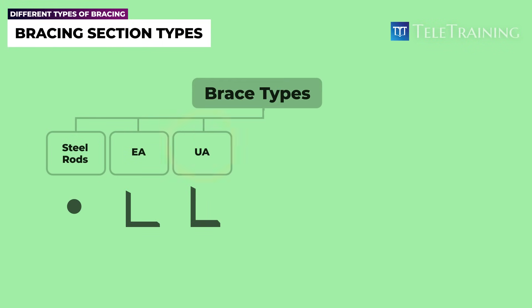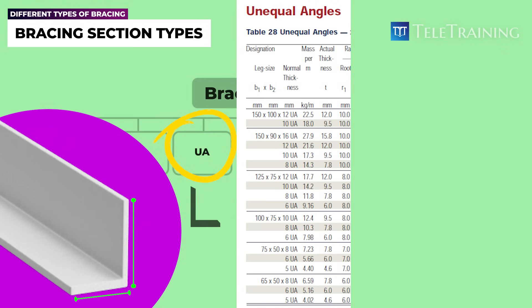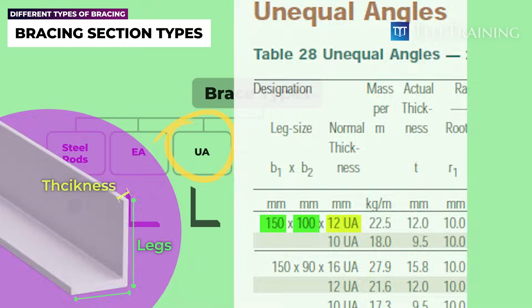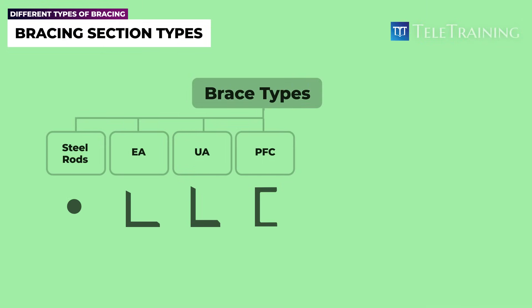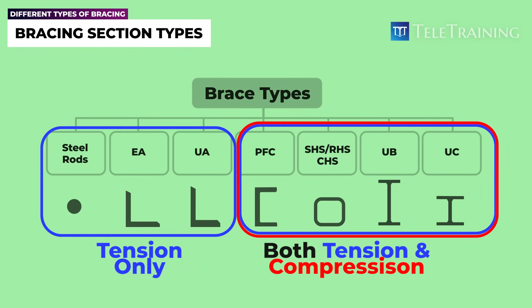An unequal angle (UA), as the name implies, has unequal legs. Similar to the equal angle section, it is identified by three numbers where the first two numbers are the leg lengths and the third number is the plate thickness. Heavier parallel flange channels (PFC), hollow sections like SHS, RHS, and CHS, and even UB and UC sections are often used in members that will experience significant compression forces, as well as tension.